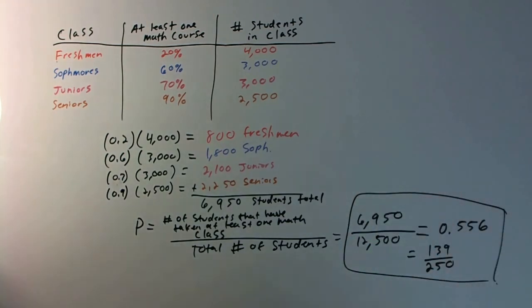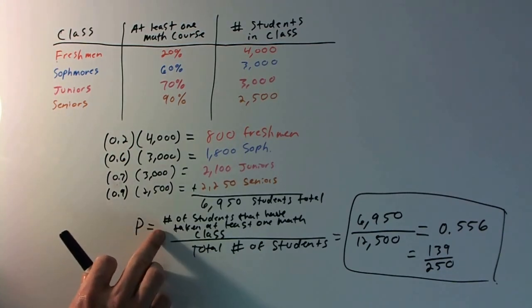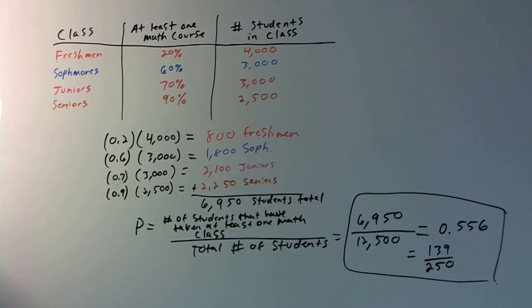So again, simple problem — it's more of a word problem than anything. It's kind of like if you have five different balls and you pick one, the probability that you'll pick a particular one is one-fifth. It's similar: just take the number of students who have taken at least one math class and divide by the total number of students to get your answer. Hopefully this helped as an example of a simple word problem in probability. Obviously things get a lot harder and more complicated, and we'll talk about that soon. See you all in the next video.